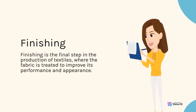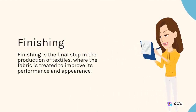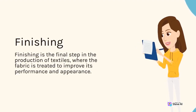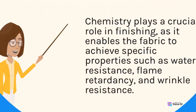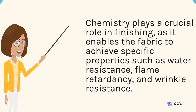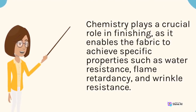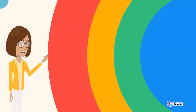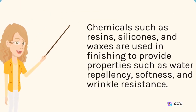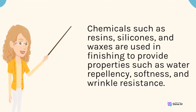Finishing is the final step in the production of textiles, where the fabric is treated to improve its performance and appearance. Chemistry plays a crucial role in finishing, as it enables the fabric to achieve specific properties such as water resistance, flame retardancy, and wrinkle resistance. Chemicals such as resins, silicones, and waxes are used in finishing to provide properties such as water repellency, softness, and wrinkle resistance.